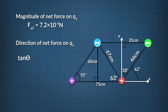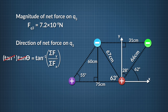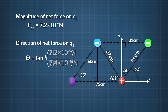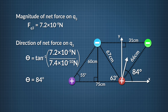To find the direction the net force points, we can use the fact that the tangent of the angle the force vector makes with the positive x axis equals the sum of the y components divided by the sum of the x components of the forces acting on q3. Taking the arctangent and plugging in f sub y and f sub x, we find that theta, the angle between the net force on q3 and the positive x axis, is 84 degrees.